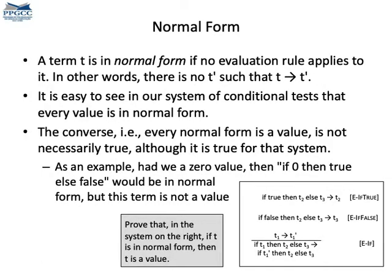I have mentioned before that terms can be in normal form. A term in normal form is a term that cannot change. There is no rule that evolves it. In our current system, if a term is in normal form, then this term must be a value. We have two values, true and false. Can you show that this statement is true? I mean, prove that if a term is in normal form, then the term must be either true or false.